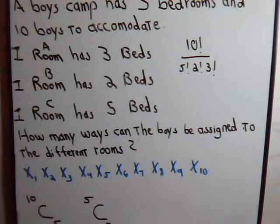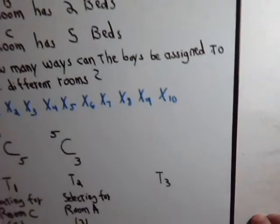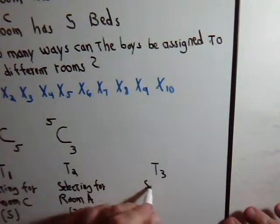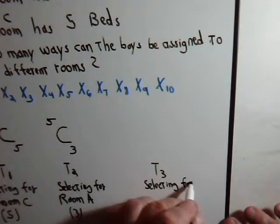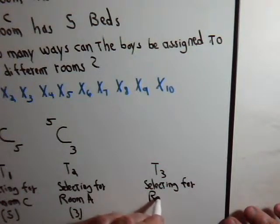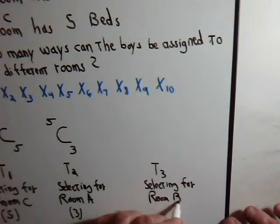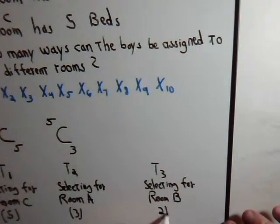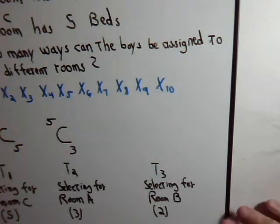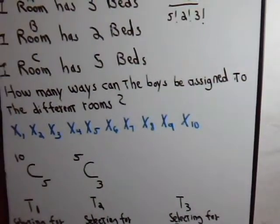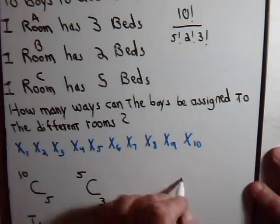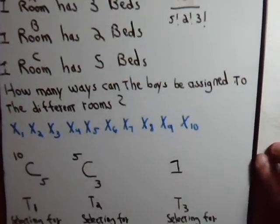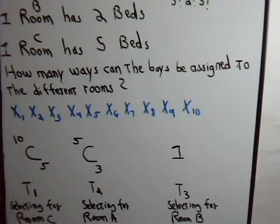There's only one way that we can select those two. So for task T3, where we are selecting for room B, where there's two beds, there's only one way to do that. There's only two boys left. And we're going to take those two boys and assign them to room B. So there's one way to perform task T3.